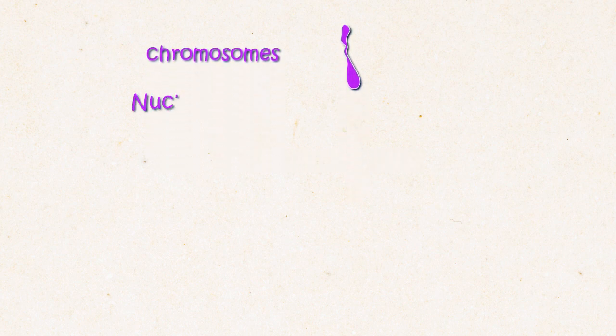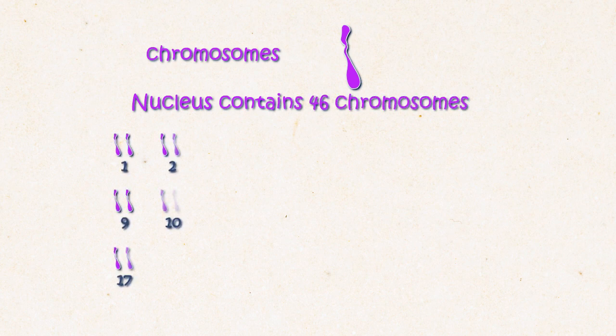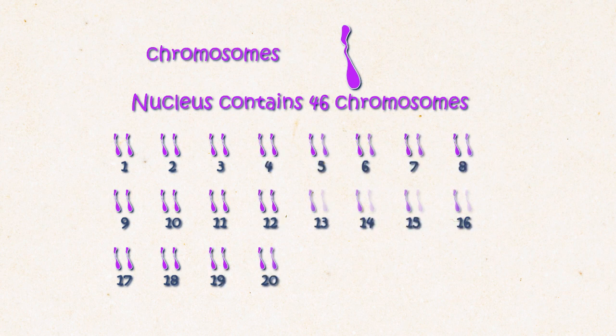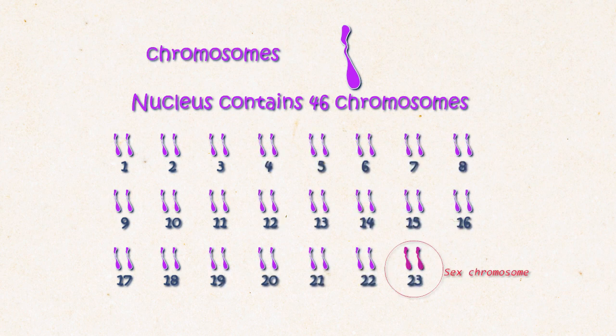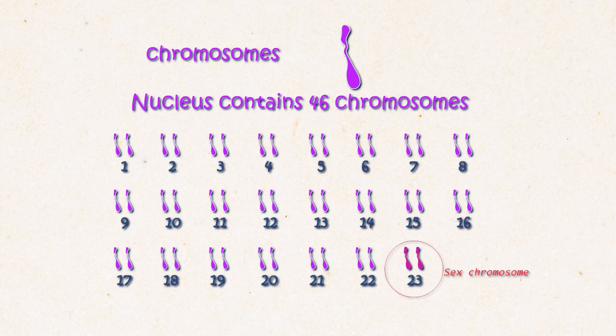In the human body each and every cell that is not a gamete contains 46 chromosomes in the nucleus. These chromosomes occur in pairs. We have 23 pairs of chromosomes. Among them 22 pairs are called autosomes and one pair of sex chromosome. Each pair contains identical copies of chromosomes except the sex chromosomes. They are different.